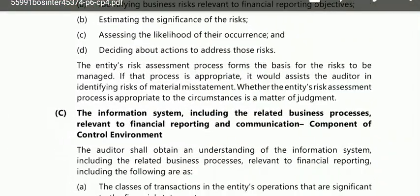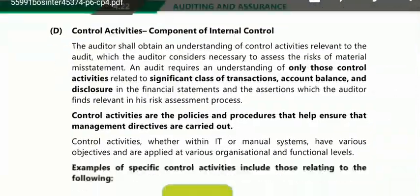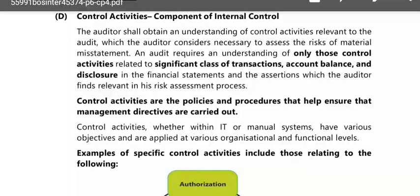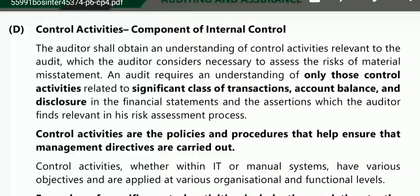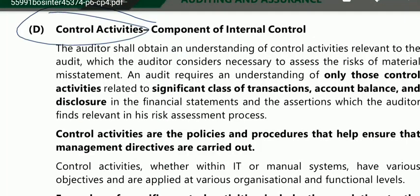Our component C is about the information system including the related business relevant to financial reporting. But before component C, I will repeat component D because I thought it was not clear in the previous video. We will cover components A, B, C, D, and E in this video. I will start with component D, then component C, then E. Component D talks about control activities.